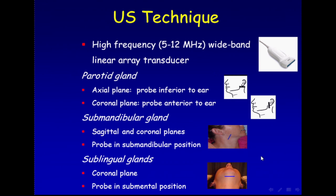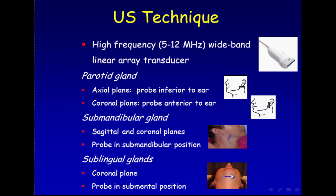The technique of the examination: we use a high-frequency 5 to 12 MHz wideband linear array transducer. For the parotid gland, the planes are axial, placing the probe inferior to the ear, and coronal, placing it anterior to the ear. For the submandibular gland, we perform sagittal and coronal planes while the probe is in the submandibular position. For the sublingual glands, the coronal plane is used while the probe is in the submental position.